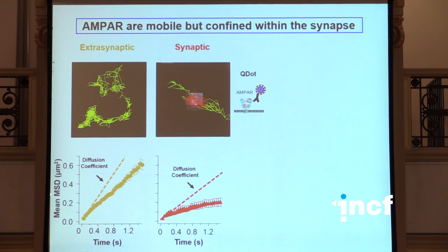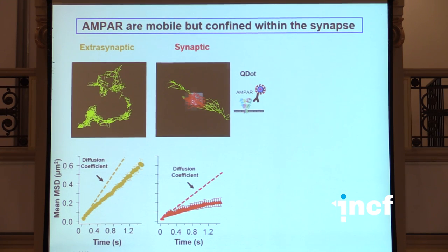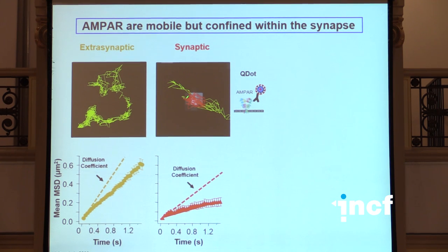Then by comparing what's called the mean square displacement - which is on average the surface explored by the receptors - comparing the surface explored by receptors in the extra synaptic membrane and in the synaptic membrane for these mobile receptors, we found a very big difference. Not so much in the instantaneous movement, the instantaneous diffusion coefficient, which is not so different - only a factor of three or four between the instantaneous speed of movement of synaptic versus extra synaptic receptors. What's very different is the curvature of these plots, which indicates that those synaptic movements are extremely confined. So it seemed from this data that synaptic receptors were mobile, but moving in a confined environment.